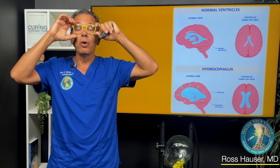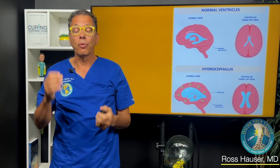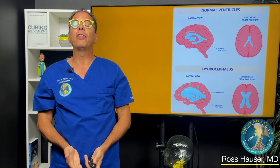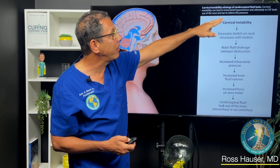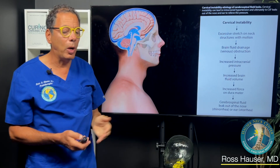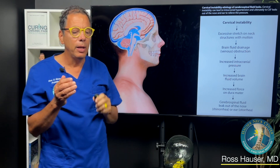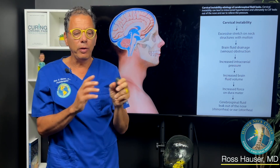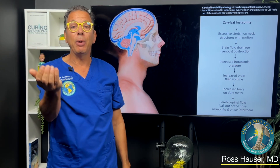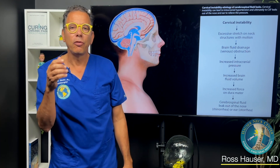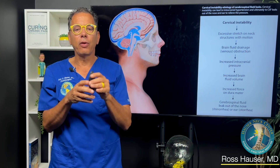You could simply have prism glasses — put prism glasses on and when you're looking at your cell phone, your neck posture is good. Basically, the cervical etiology of cerebral spinal fluid leaks: one way ligamentous cervical instability affects the cerebral spinal fluid is by blocking, but you can also get a cervical spinal fluid leak.